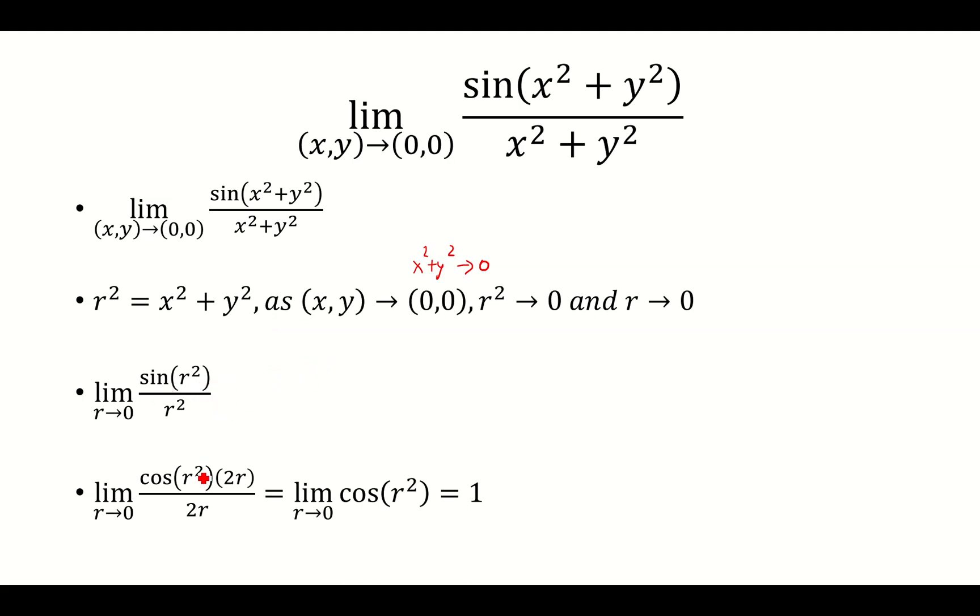Take the derivative of sine r squared. That's cosine r squared times 2r over 2r. The derivative of r squared is 2r. These are going to cancel. Cosine of r squared goes to 1 as r approaches 0, so our limit is equal to 1.